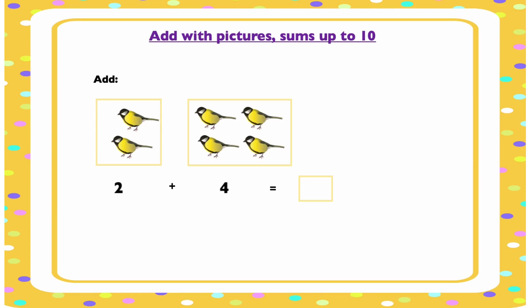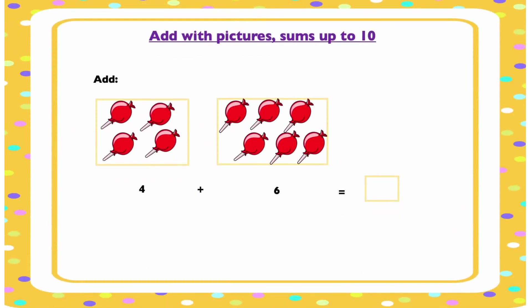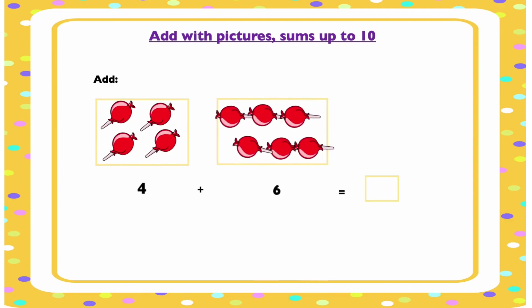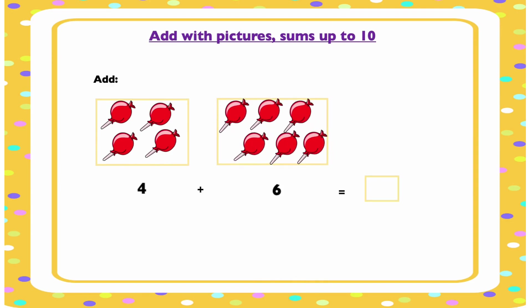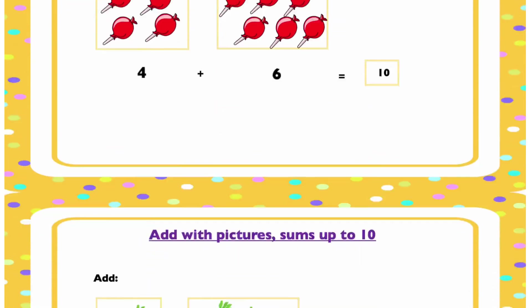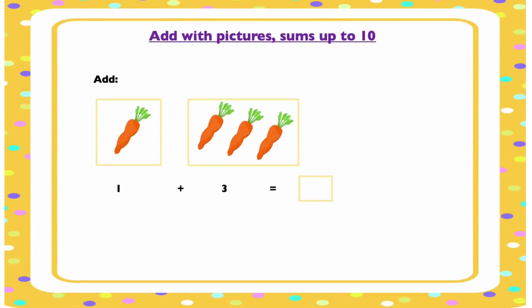We have some yummy lollipops. We have two groups — four in one group and six in the other group. Let's find out how many there are altogether by adding them together: one, two, three, four, five, six, seven, eight, nine, ten. We have ten of them, so the sum of four and six is ten.